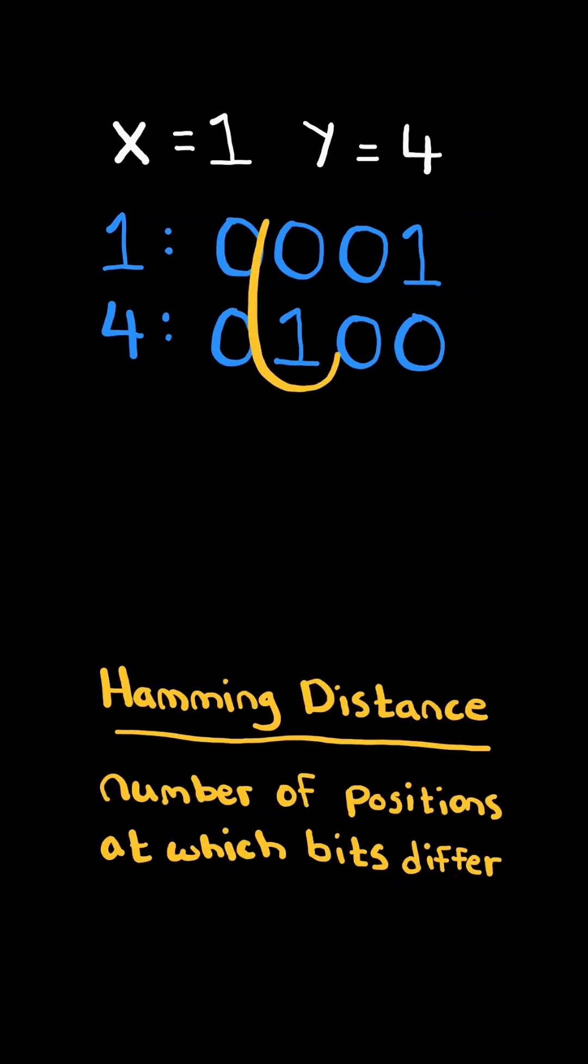The Hamming distance between two integers is the number of positions in which the corresponding bits are different. In this case, the Hamming distance between x and y is 2.